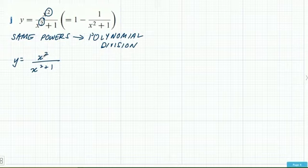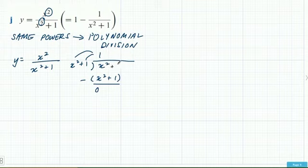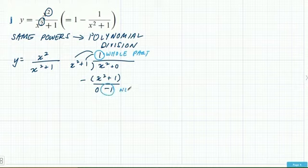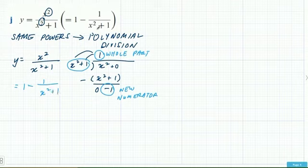So this one we do similarly to the last. The two graphs we're adding are y=1 and y=−1/(x²+1). Let's look at the shapes and intersections. The first graph y=1 is just a horizontal straight line. The second is a reciprocal graph, so consider the denominator x²+1 first — it's a parabola translated up 1 unit. We'll sketch its reciprocal.